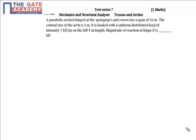This question is from Mechanics and Structural Analysis from the topic Trusses and Arches. In this question, a parabolic arch hinged at the springs and crown has a span of 16 meters. The span is 16 meters and the central rise of the arch is 3 meters.